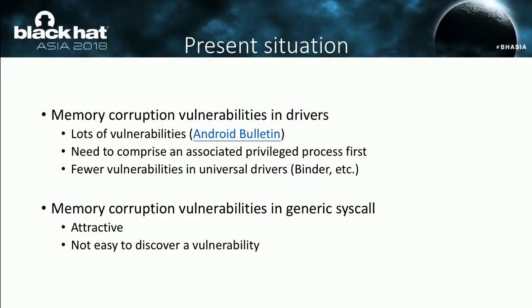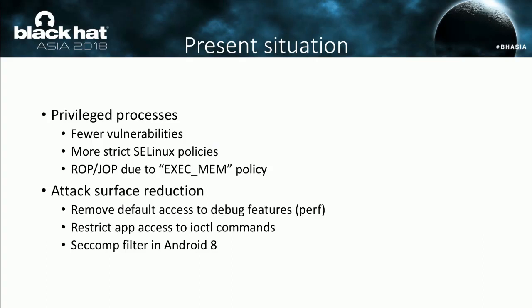There are two common ways to gain root privileges. The first one is to compromise the kernel through drivers. You can find many vulnerabilities in drivers listed in Android vulnerability bulletins every month. However, to access a driver you first need to compromise the associated privileged process — that's another hard task. Although some universal drivers like binder can be reached directly, there are fewer vulnerabilities. The other way is using a vulnerability in a generic syscall. It's attractive but difficult to discover. Privileged processes tend to have fewer vulnerabilities than drivers. With strict SELinux policies enforcing, fewer resources can be accessed by a specific privileged process. Due to exact memory policy, shared code can be mapped and executed directly, so many ROP or JOP gadgets are required.